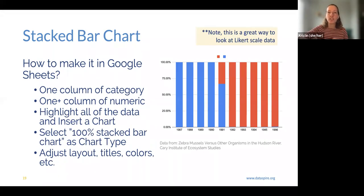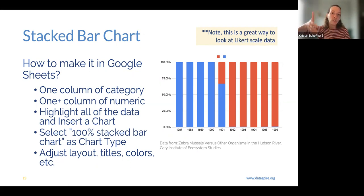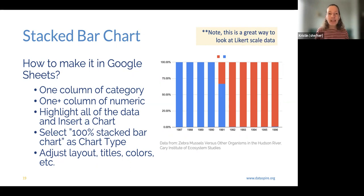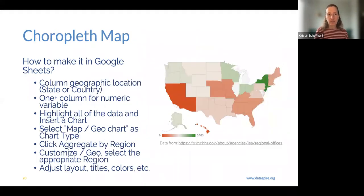The 100% stacked bar chart is where we're looking at the percent of categories within a bar — the percent of numeric values within each category. You want your column of categories and a numeric value showing the different components. Highlight all of that data, go to chart, and select 100% stacked bar chart. In the bar chart options, there's the typical bar chart where heights differ, and this is the separate option — 100% stacked bar. Then customize it.